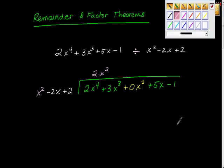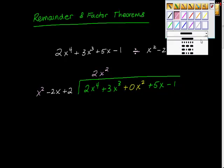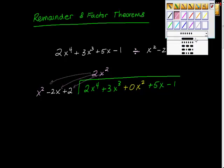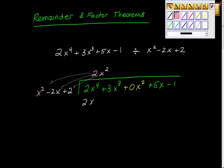Remember when we did long division in 5th grade — it was divide, multiply, subtract, bring down. Same thing. We just divided. Now we're going to multiply: this times this, then this times this, then this times this — we're going to distribute across the whole thing. That's going to look like 2x to the 4th. This times this is negative 4x cubed. And this times this is positive 4x squared.